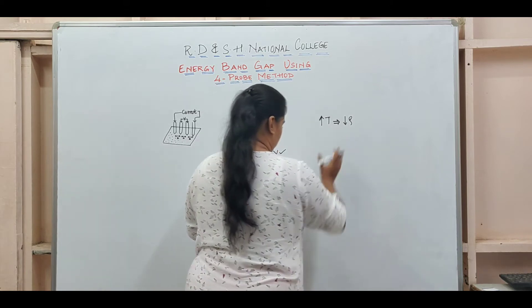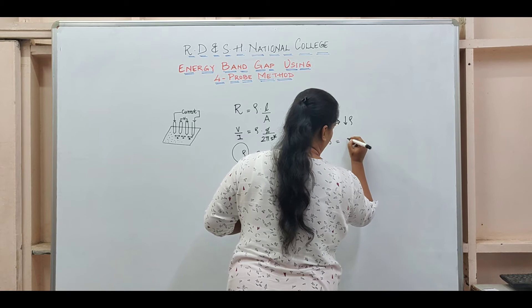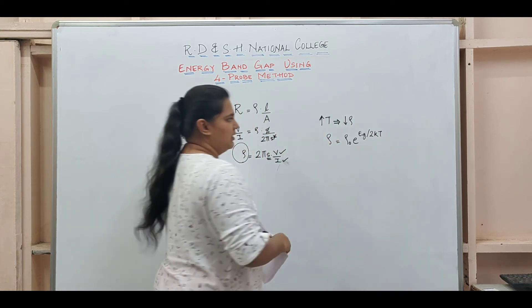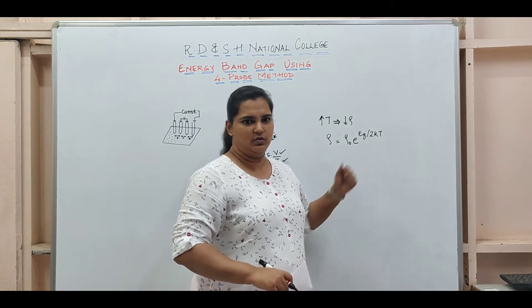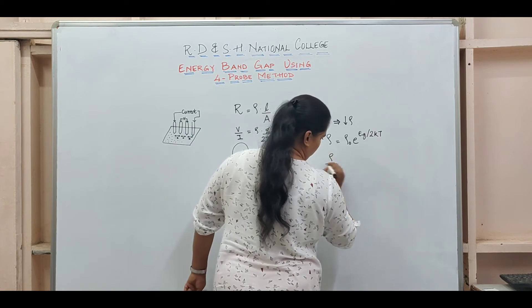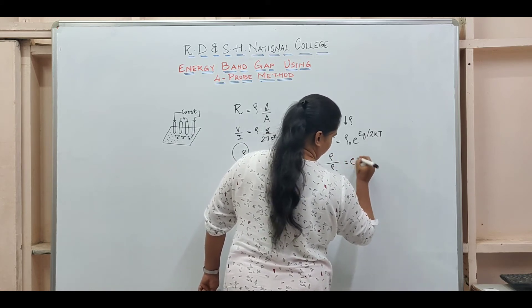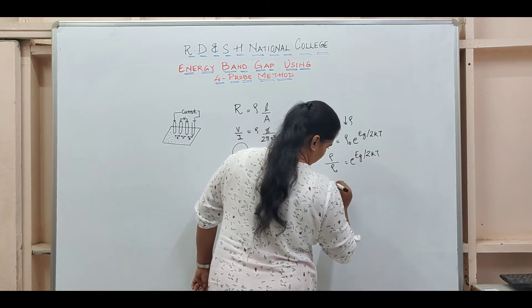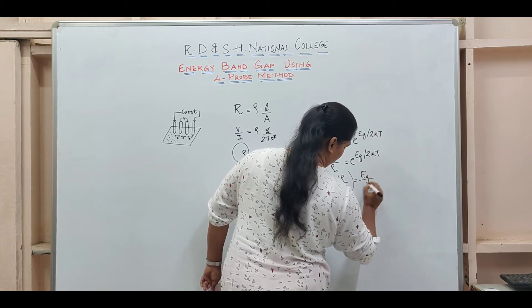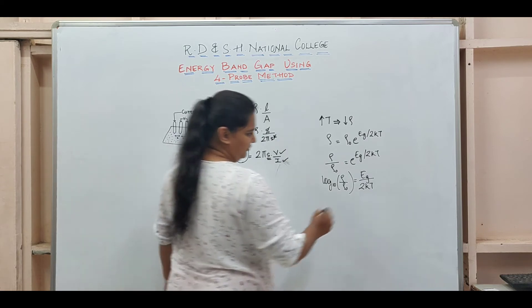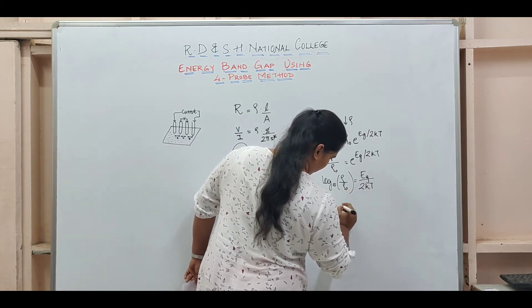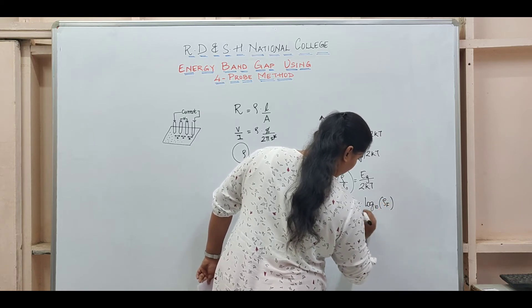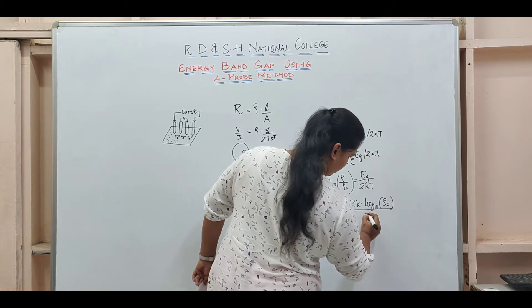This is an important relation we need to know. Rho equals rho naught e raised to EG by 2kT. This is an equation for intrinsic extrinsic semiconductors. You get rho over rho naught equals e raised to EG by 2kT. If I take log on both sides, I will get log to the base 10, rho by rho naught equals EG by 2kT. Since I want to calculate EG, I can write this as EG equals 2k times log of 10, then with T in the denominator, I can write this as T inverse.